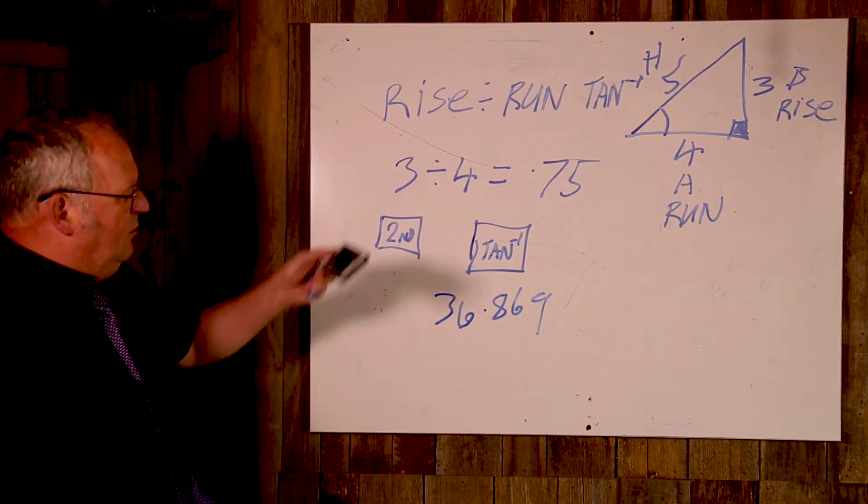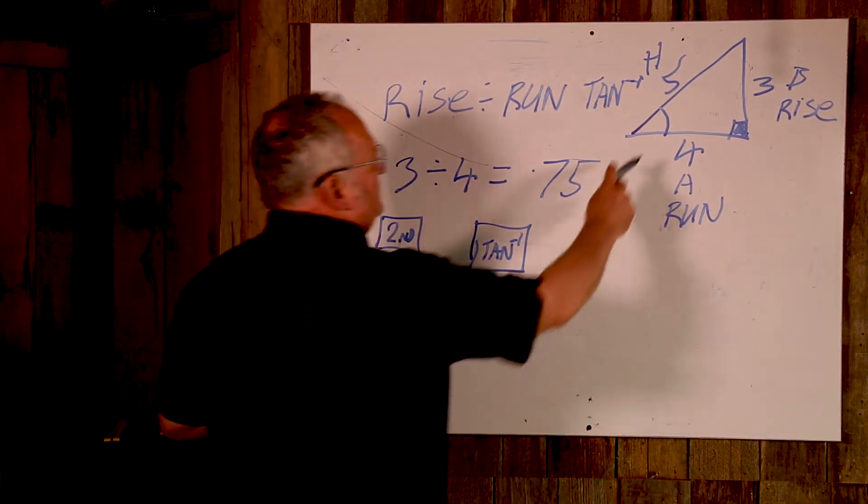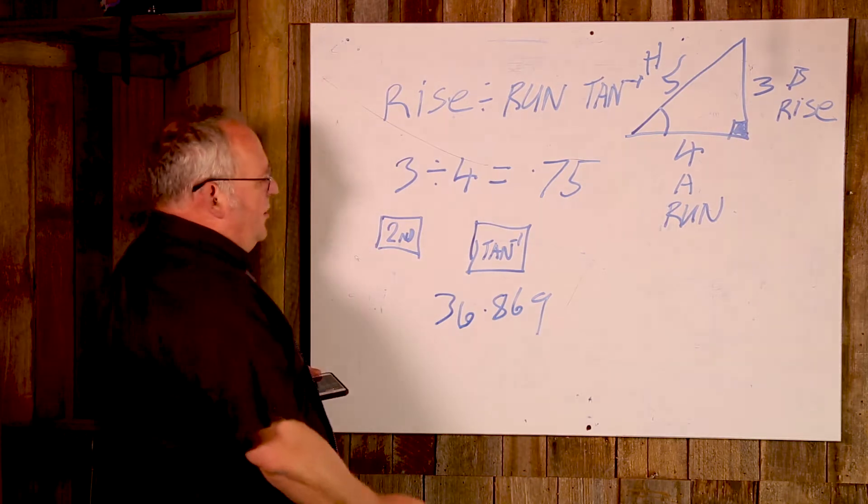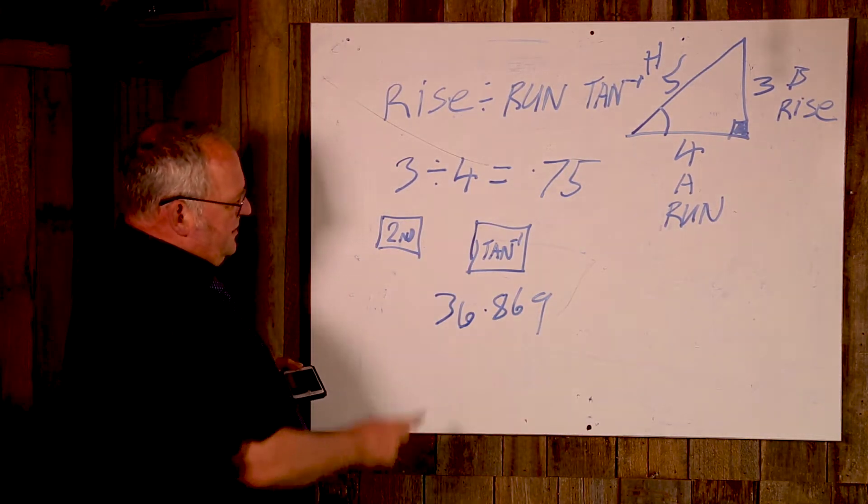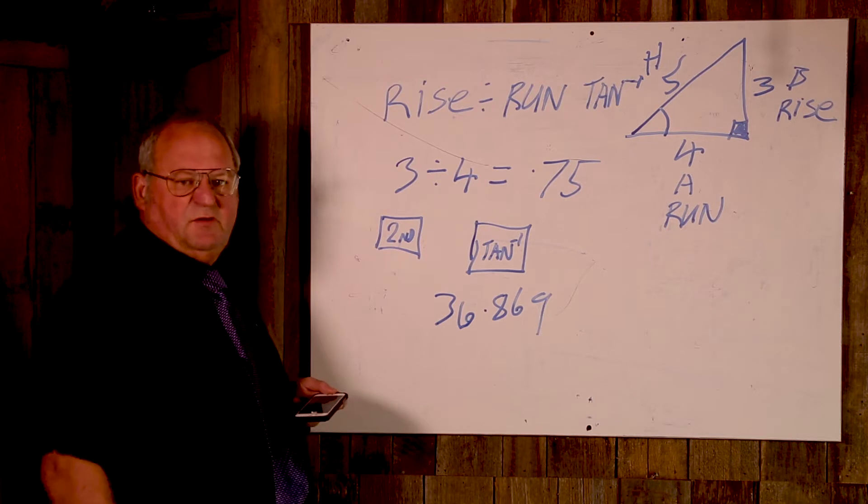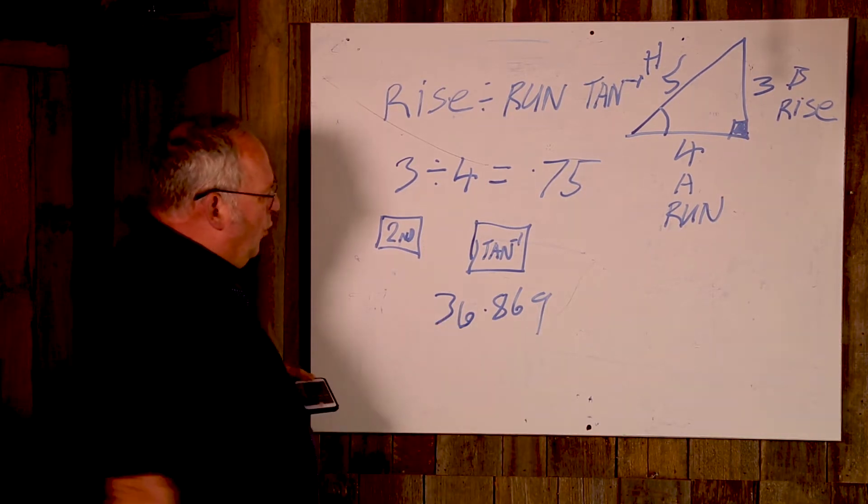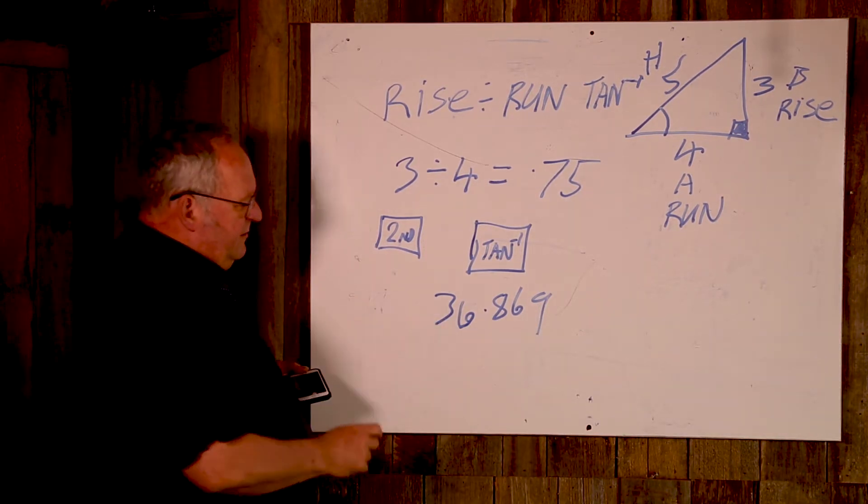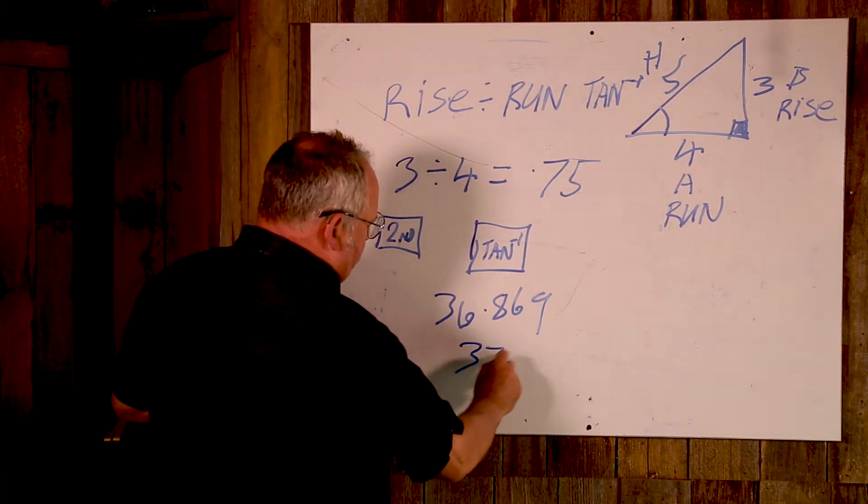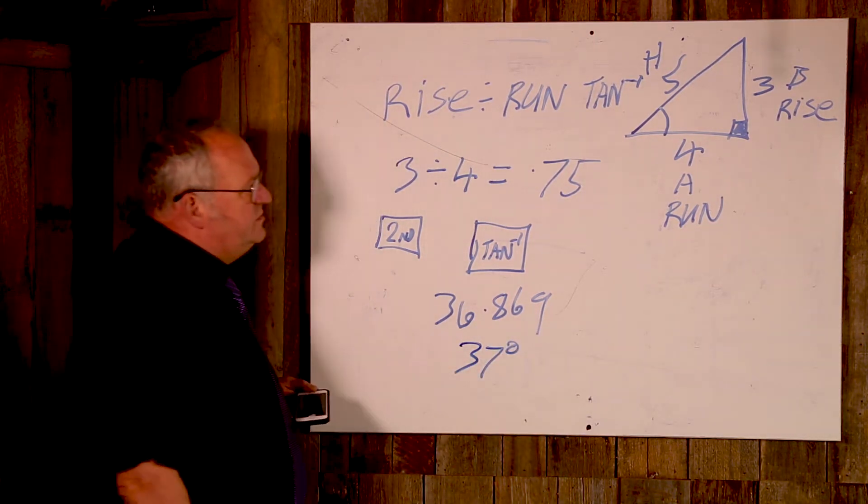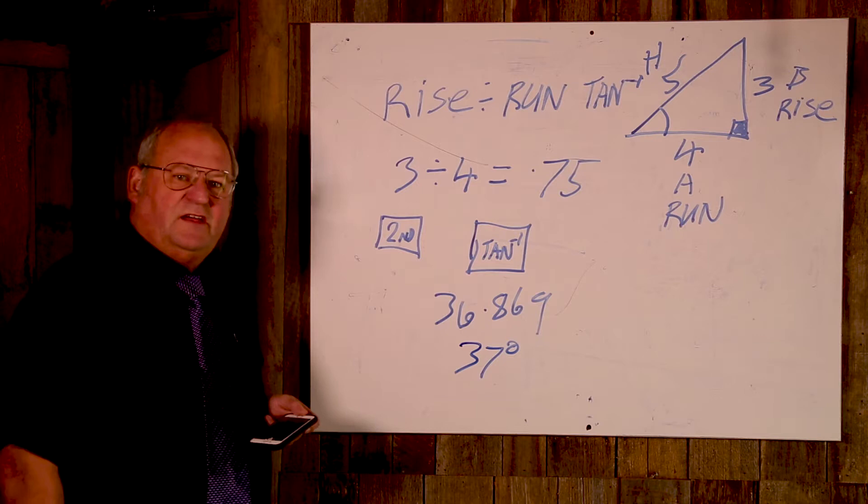So rise divided by the run, second function, inverse tan, and it gives me 36.869. But of course we would round that and it would become 37 degrees. So that's a simple thing of finding the angle with the triangle.